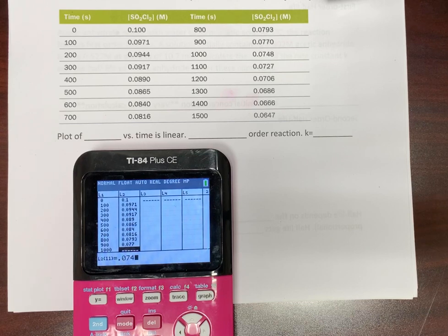0.0793, 0.0770, 0.0748, 0.0727, 0.0706, 0.0686, 0.0666, 0.0647.